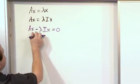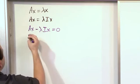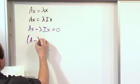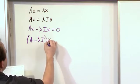And then finally, I can factor out an x because I have an x in both sides. So the way I'm going to do that is I'll open parentheses and I'll say A minus lambda I times x is equal to zero.